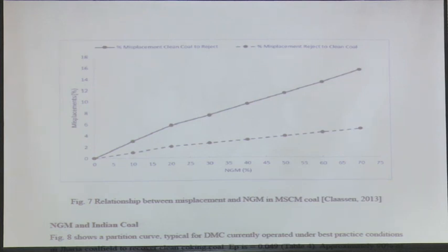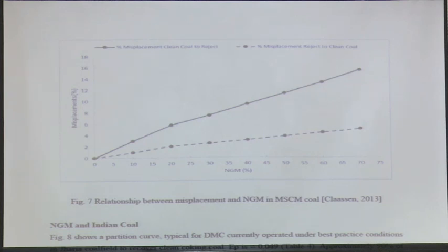In a large number of cases over the entire spectrum of NGM values, say from 5 to 65, it is very difficult to get this kind of relationship. But one interesting thing: the percentage misplacement of clean coal to reject is very high compared to the percentage misplacement of reject to clean coal. There is a significant difference.